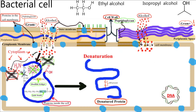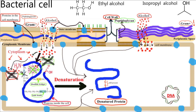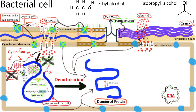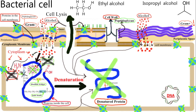Here you can see how the protein shape is altered due to denaturation. If the proteins in the cell membrane and inside the cell are denatured, they will no longer be able to carry out their cellular function. Alcohol can also dehydrate the bacterial cell. A cell cannot survive without functional proteins, and alcohol also induces cell lysis. The bacterium will die.